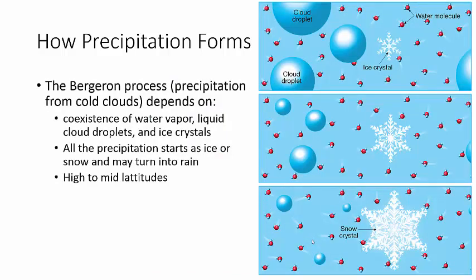Now, like I said, two processes form the precipitation. The first one, the Bergeron process doesn't happen in warm areas. It happens in mid- to high-latitude areas. And it also can happen if you're at a really high altitude.